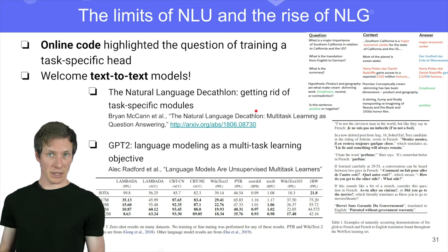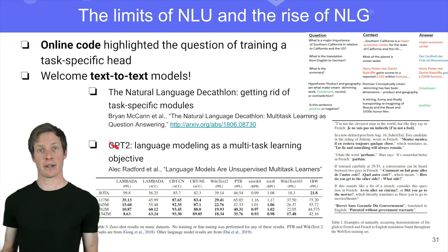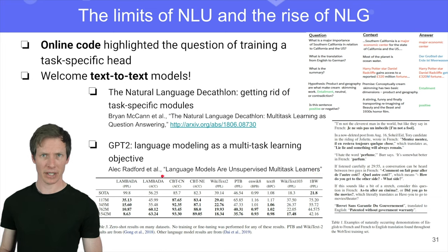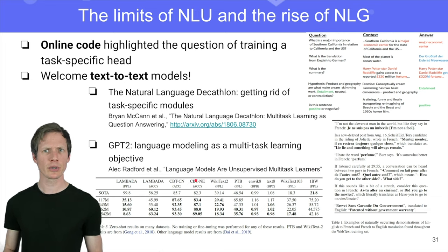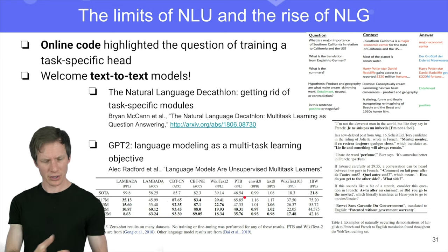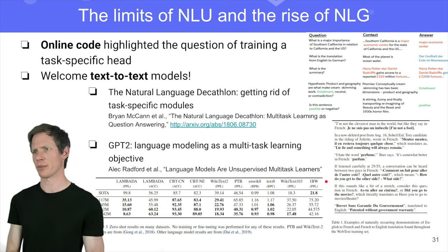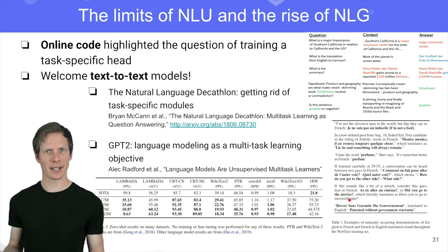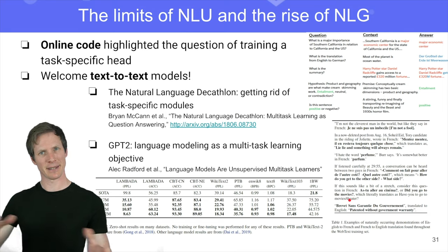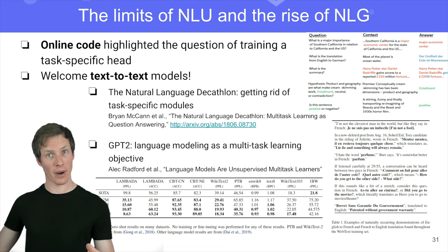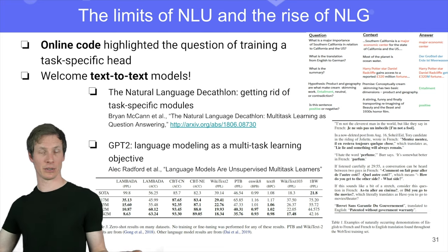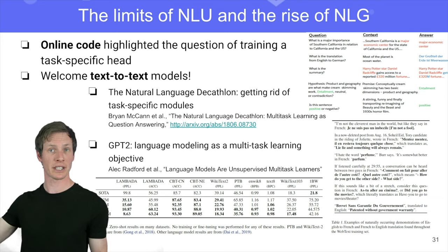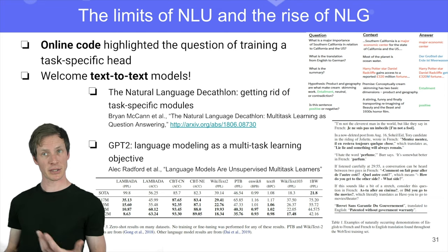GPT-2 is a big model that got a lot of attention. It was also featured in a very nice paper called 'Unsupervised Multitask Learners,' with a lot of zero-shot experiments. For summarization, they used what they called the TLDR — 'too long, didn't read' — and then put the sentence to summarize. The model is not trained on it; it's zero-shot. The model tries to generate a plausible completion, which turns out to be a summary, and GPT-2 is quite good at that.